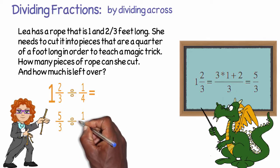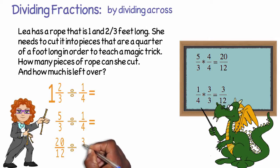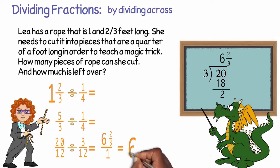Now we have five thirds divided by one quarter. Since the denominators are not the same, we need them to match up by using the common denominator of twelve. Giving us twenty twelfths divided by three twelfths. When we divide across, we get twenty divided by three, which is six and two thirds, and twelve divided by twelve, which is one. Since dividing by one does not change your answer, the final answer is six and two thirds.